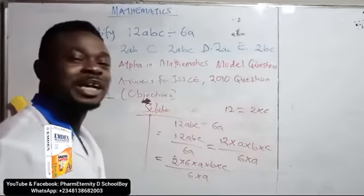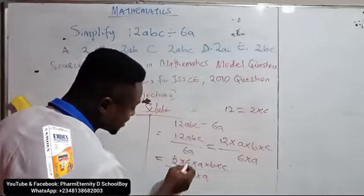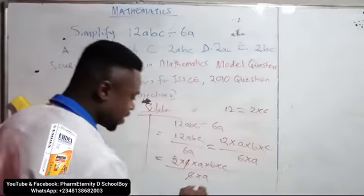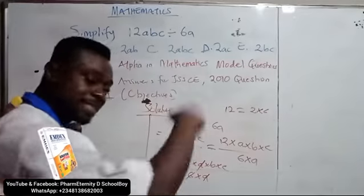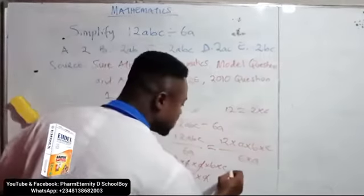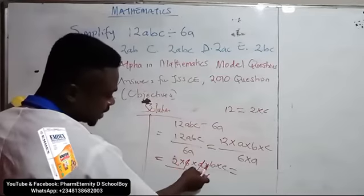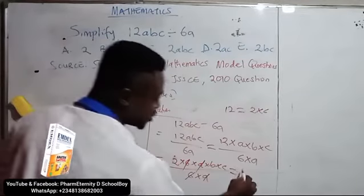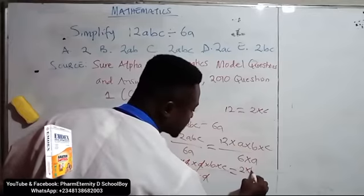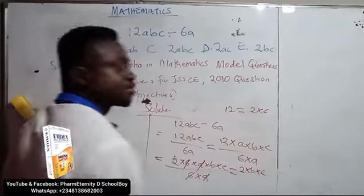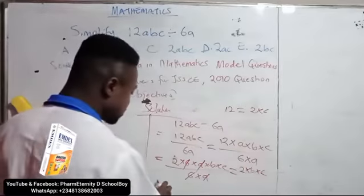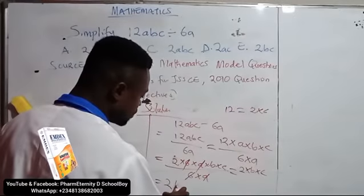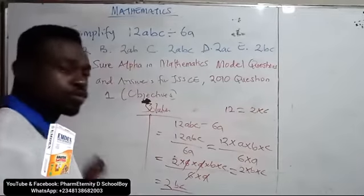Perfect. We can now cancel out. So 6, we cancel 6 here. They will go. A will cancel A here. They will go. And what will remain here is 2 times B times C. So we have 2 times B times C. So this will give us 2BC.